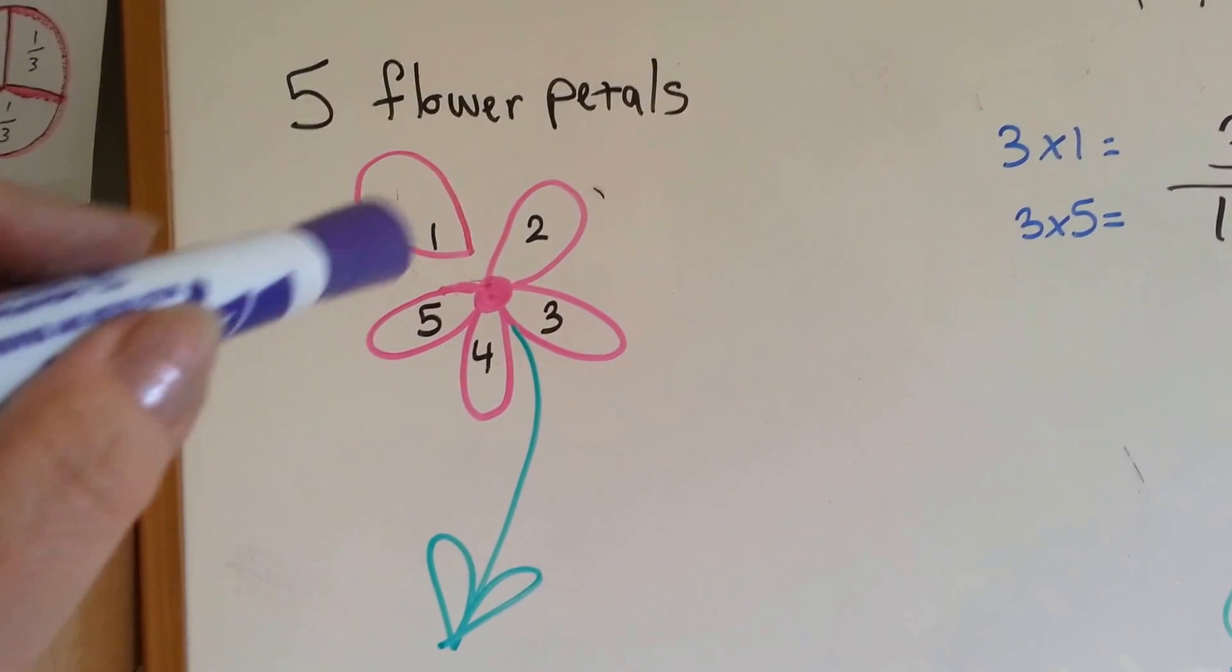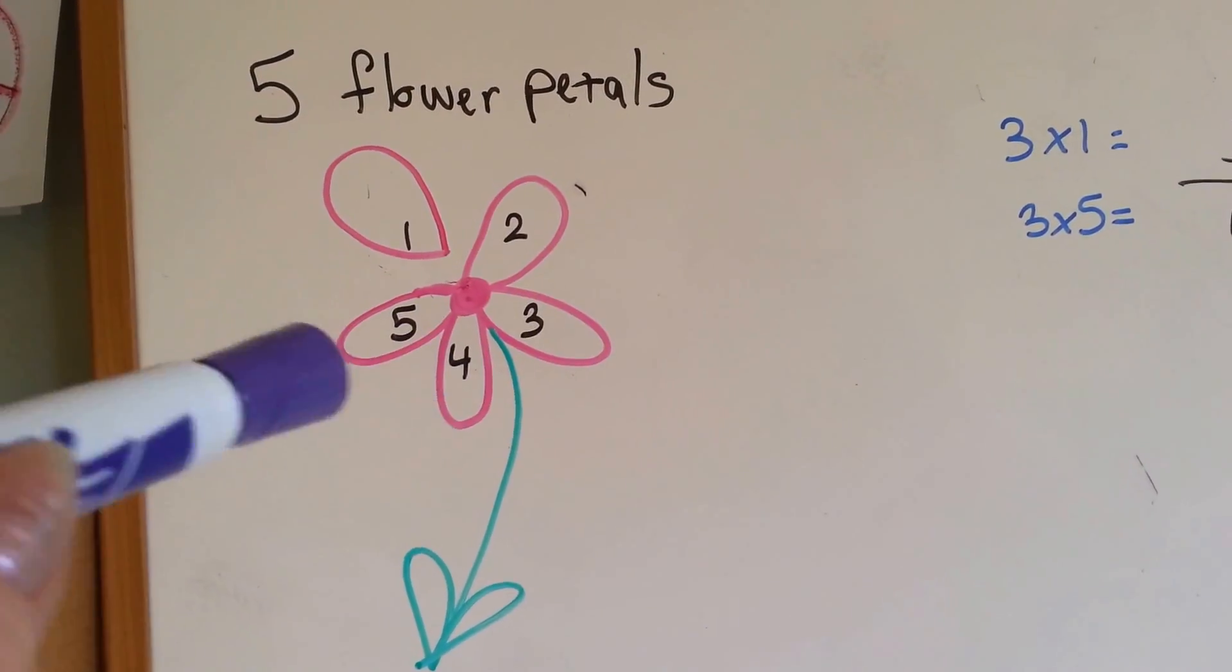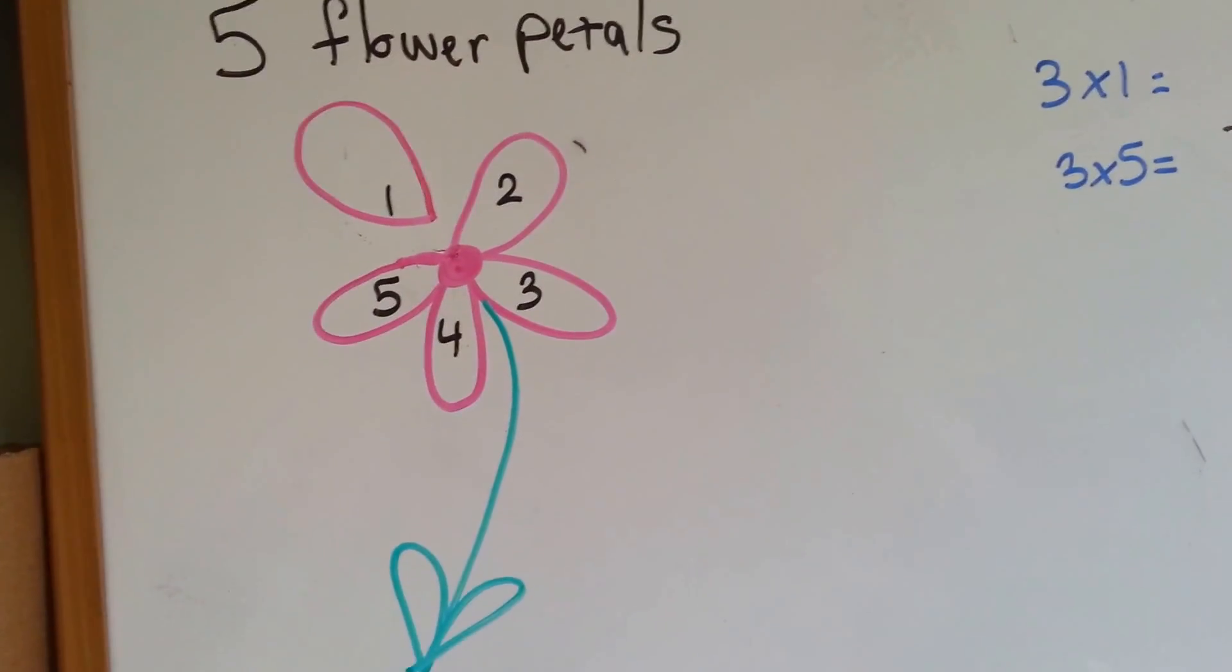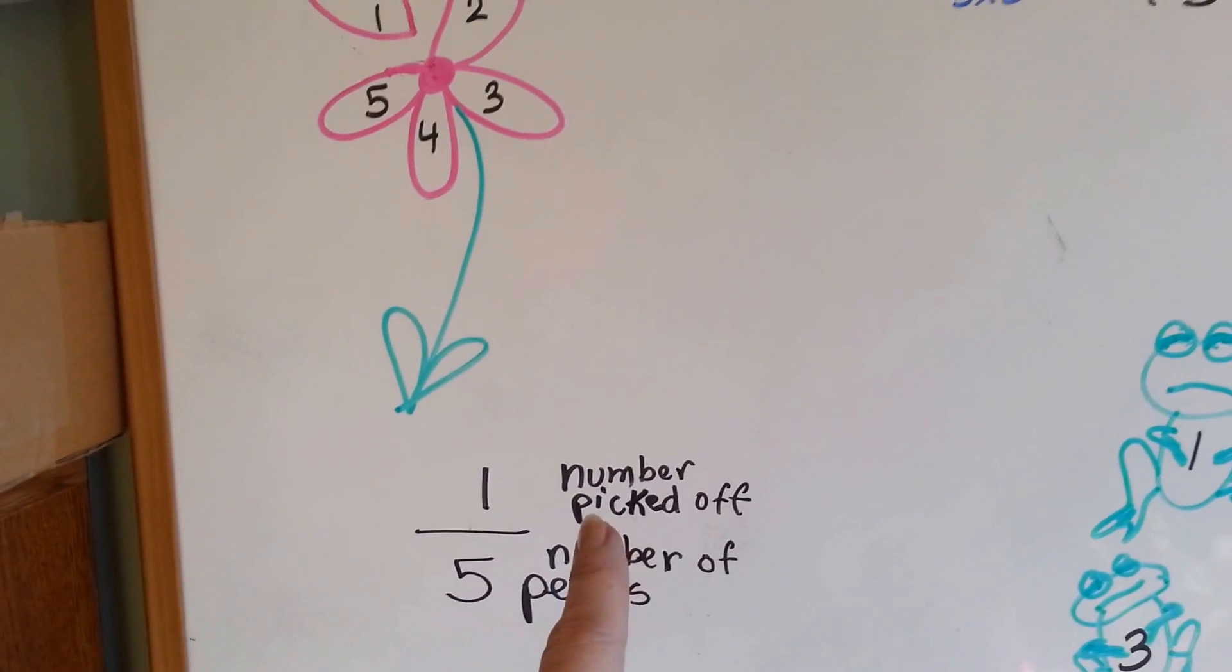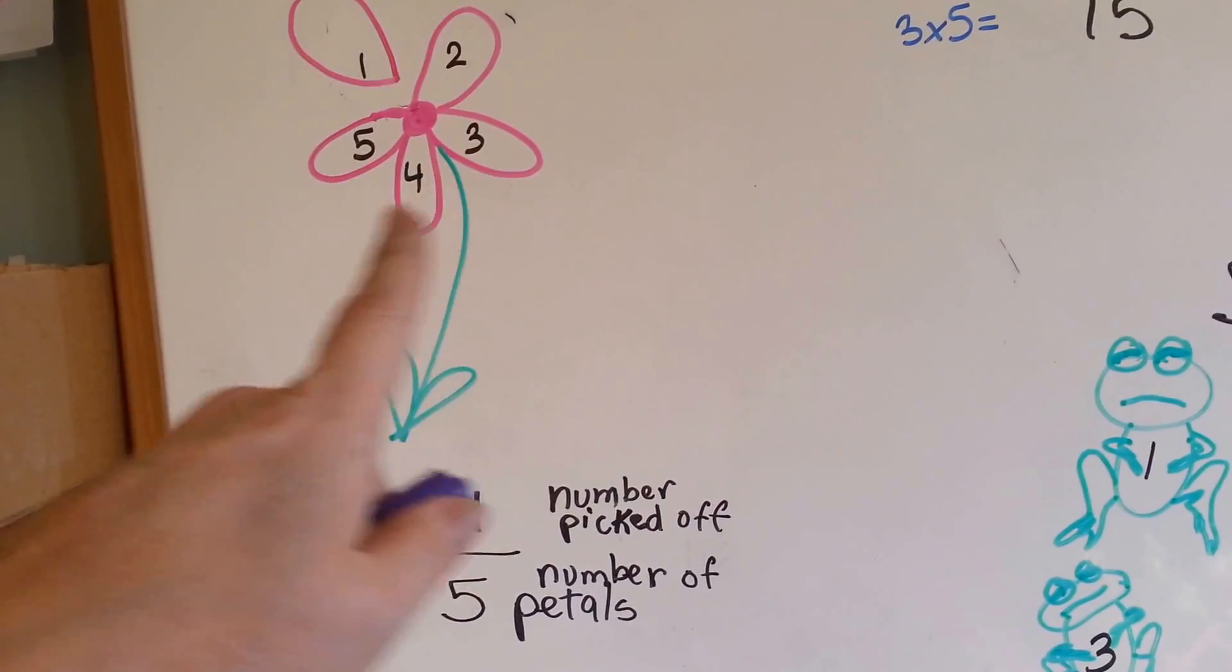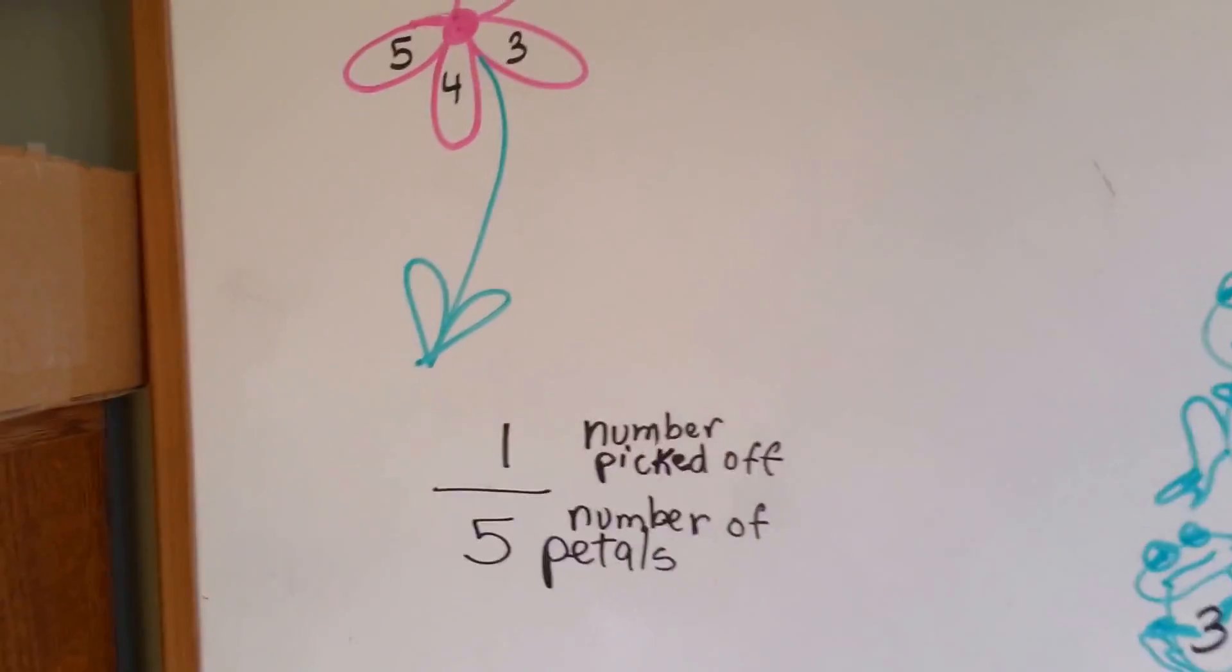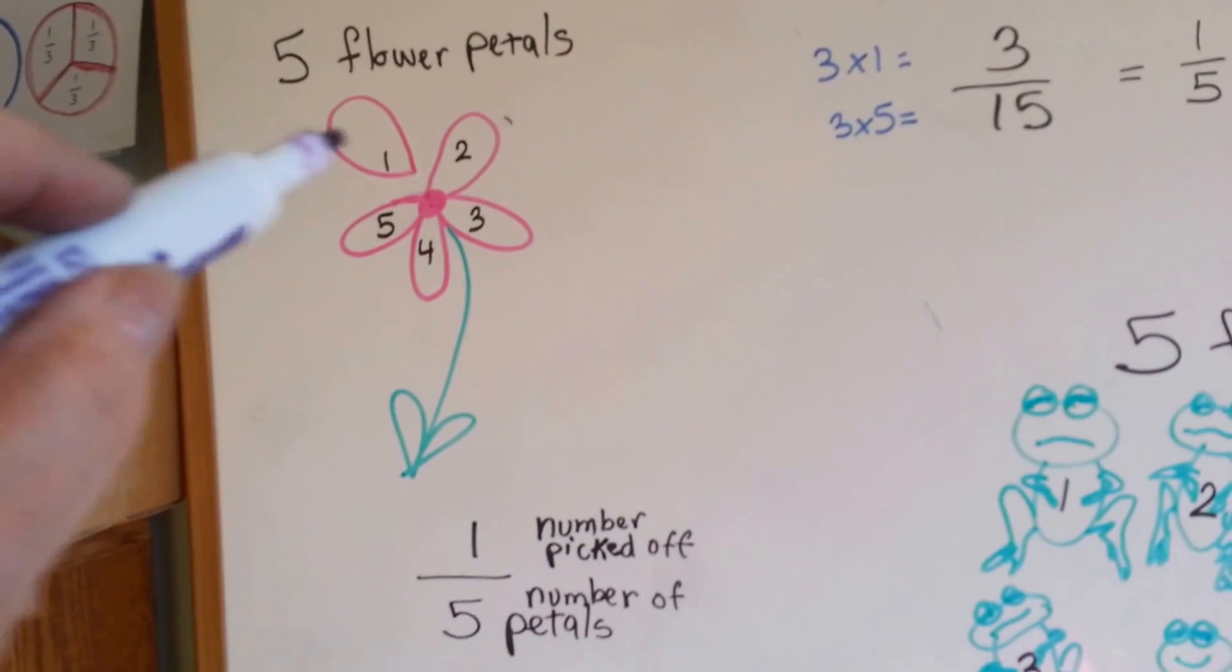Here we have a flower and there's five flower petals. One, two, three, four, five. One of them was picked off. Poor flower. So, one is the number of petals that was picked off. Five is the total number of petals. So, one-fifth of the petals were picked off. One-fifth.